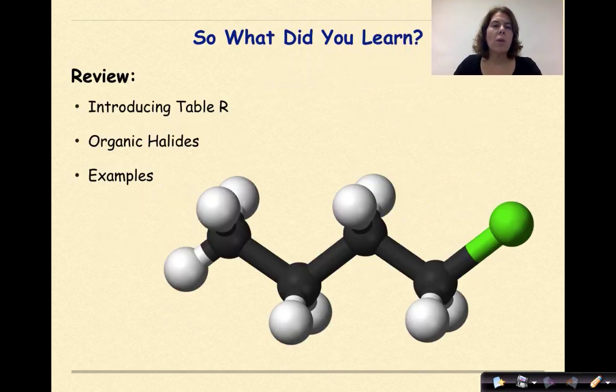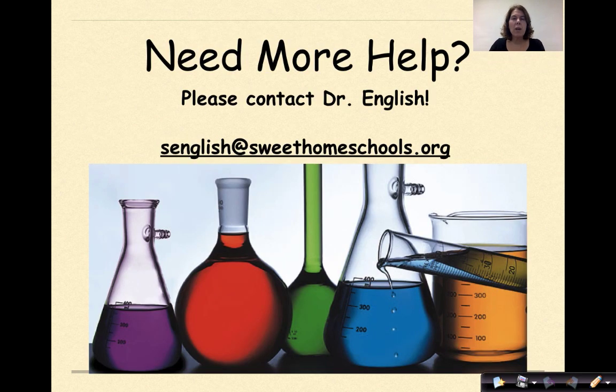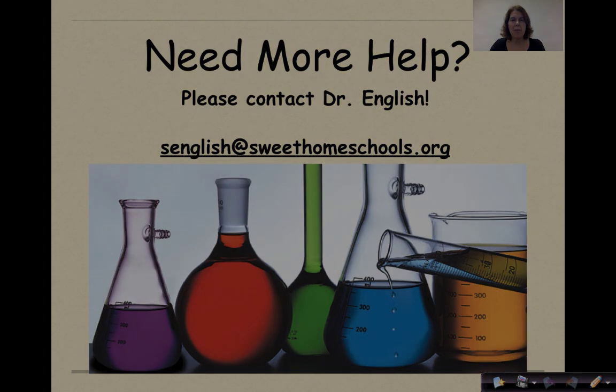So what did you learn? We introduced table R, which we're going to use a lot over the next couple of videos. We talked about organic halides, specifically fluorine, chlorine, bromine, and iodine. And then we did a bunch of examples. Need more help? Feel free to contact me. Have a great day.